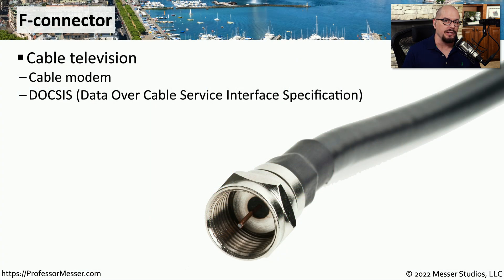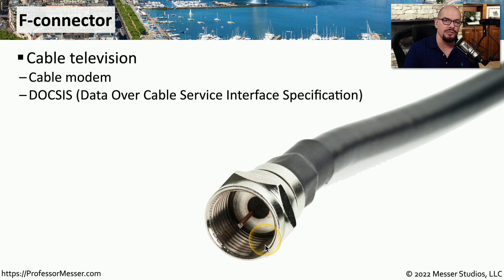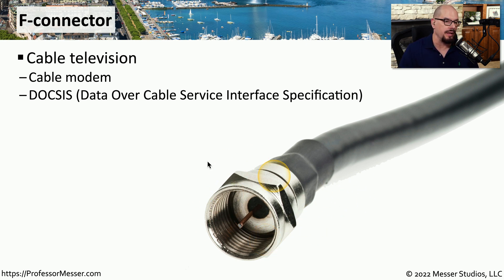If you have cable television, then you're probably familiar with the F connector. This connector is used on a coaxial cable, and it has a threaded connection at the end to physically screw onto the connection so that it can't easily pull off. You might also use an F connector if you subscribe to an internet connection from your cable company. This is usually brought in with a standard called DOCSIS, which is Data Over Cable Service Interface Specification.